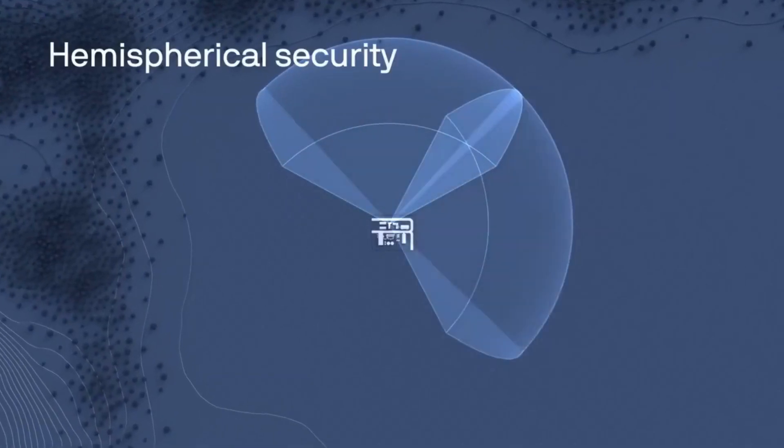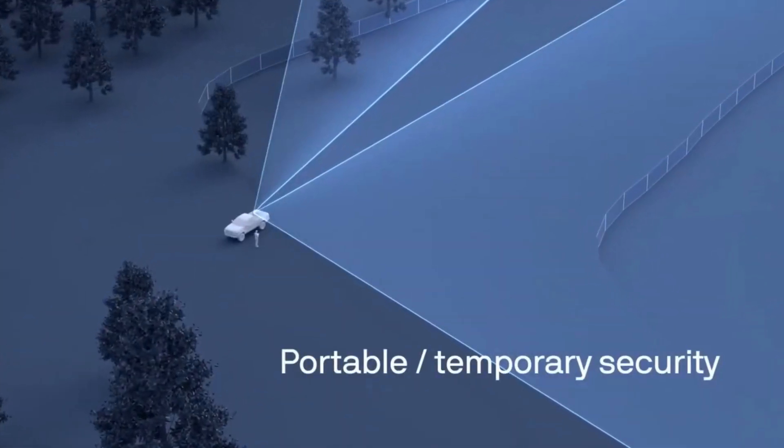Multiple Echoguard units can be arrayed for hemispherical coverage or easily networked to secure any location or perimeter.